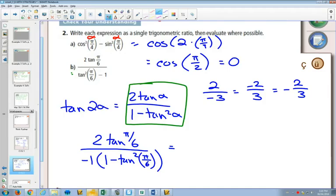I have a negative in the bottom of my fraction. But if I write the negative out front, I have: -2tan(π/6) / (1 - tan²(π/6)).